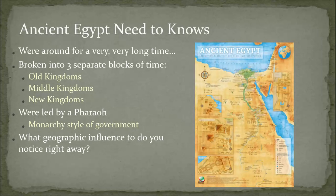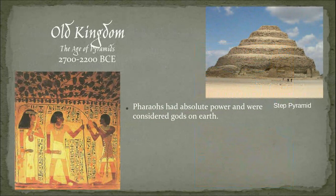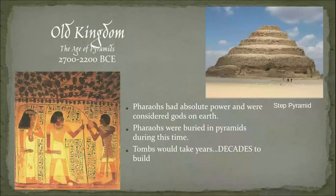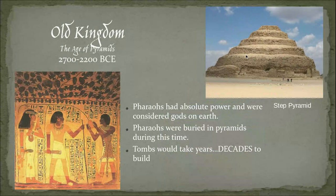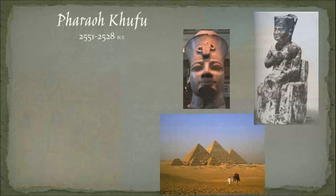Going into the first kingdom — the Old Kingdom — you'll notice the time span is about 500 years. By itself, this one section is older than and has been around longer than the United States. This is really where you see a lot of pyramids start popping up. These are rocks they got from the earth, moved on the Nile River, and they had a couple of different functions. The most notable function is as tombs for pharaohs to be buried in.